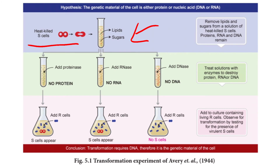In the first test, protease enzyme was added to digest proteins. After removal of proteins from the S cell extract and mixing with the R strain, S-type cells still appeared, showing that protein removal did not stop transformation.